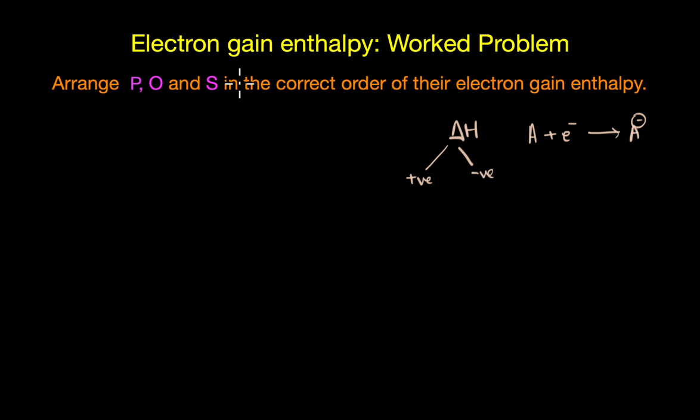So if you look at the trend of electron gain enthalpy, you will see that it generally increases across a period. This is because, across a period, the effective nuclear charge increases. As a result, it would be easier to add the electron to these smaller atoms and it would experience greater nuclear attraction.